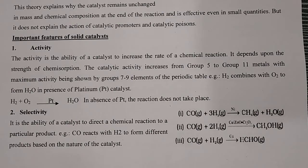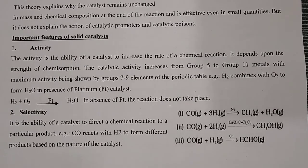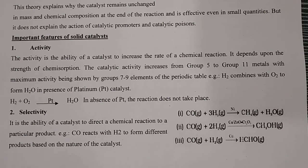The catalyst activity increases from Group 5 to Group 11 metals, with the maximum activity being shown by Group 7 to 9 of the periodic table. For example, H2 combines with O2 to form H2O2 in the presence of platinum. Generally, D-block elements show catalytic activity.